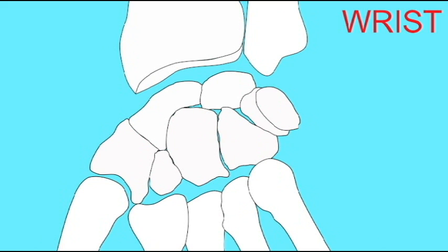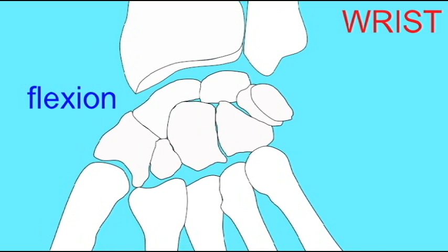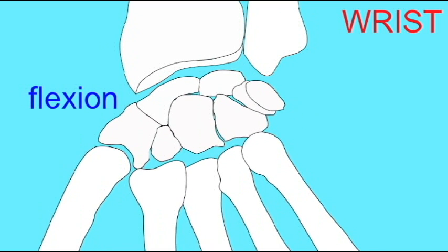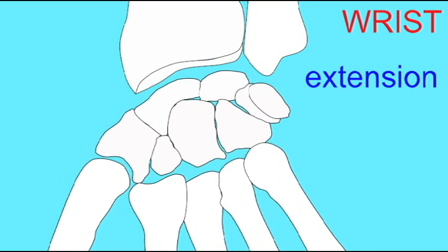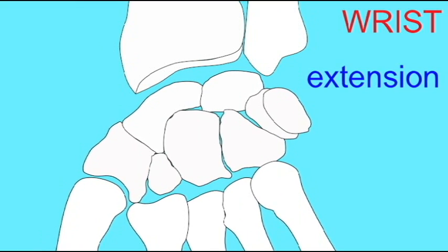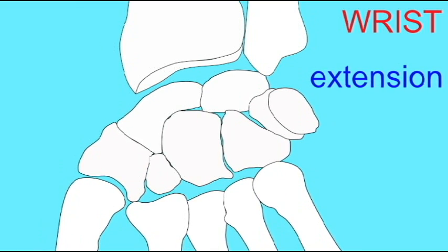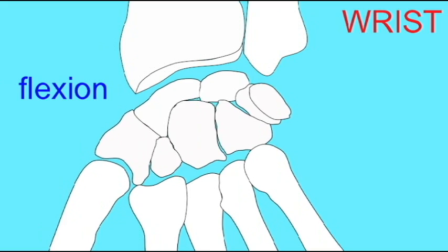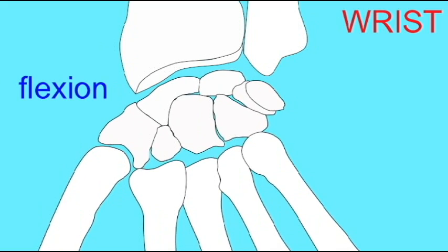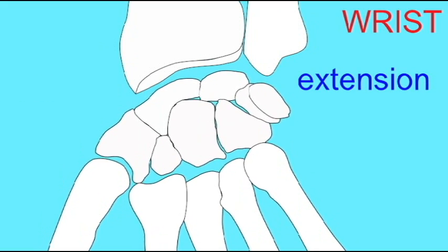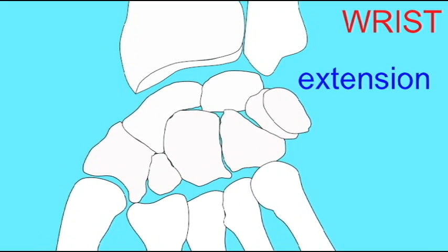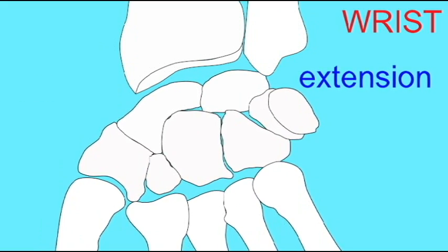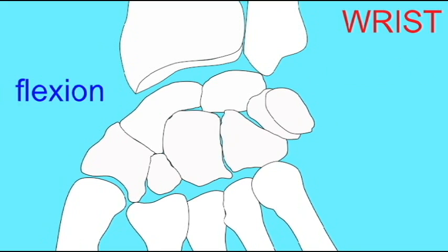For example, it allows for the flexion and extension of the wrist — this is one plane of movement. Not only can we extend our wrist to its position in anatomical position, we can also perform some hyperextension of the wrist beyond anatomical position.